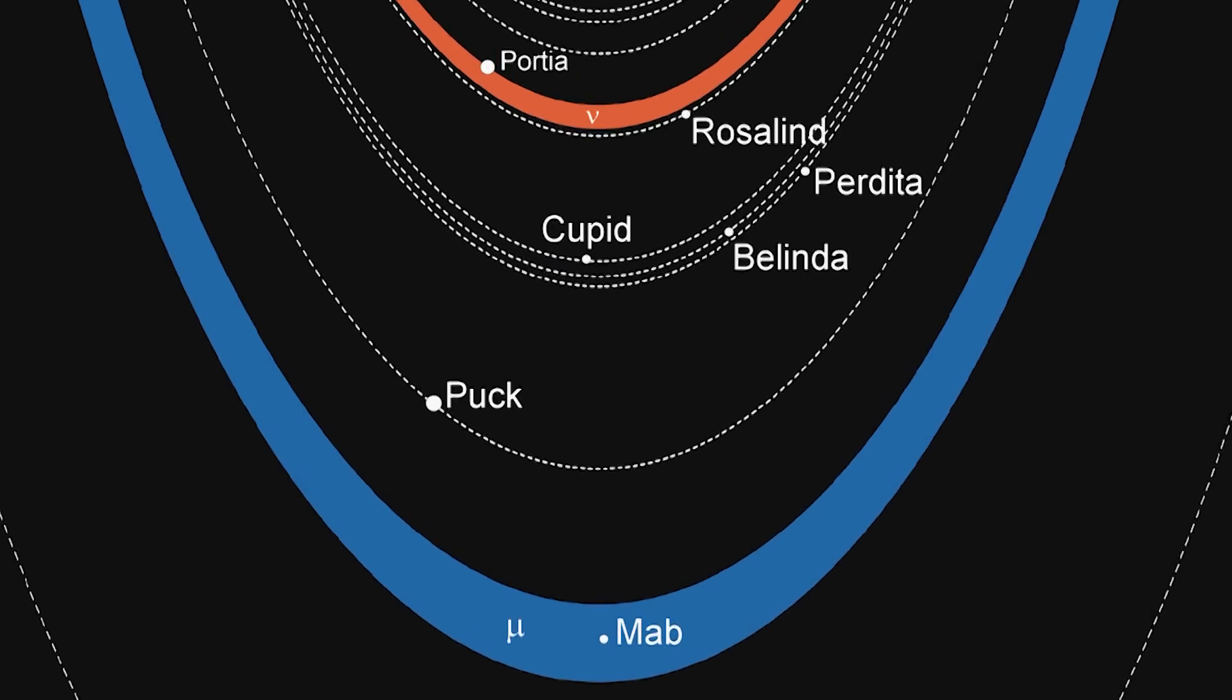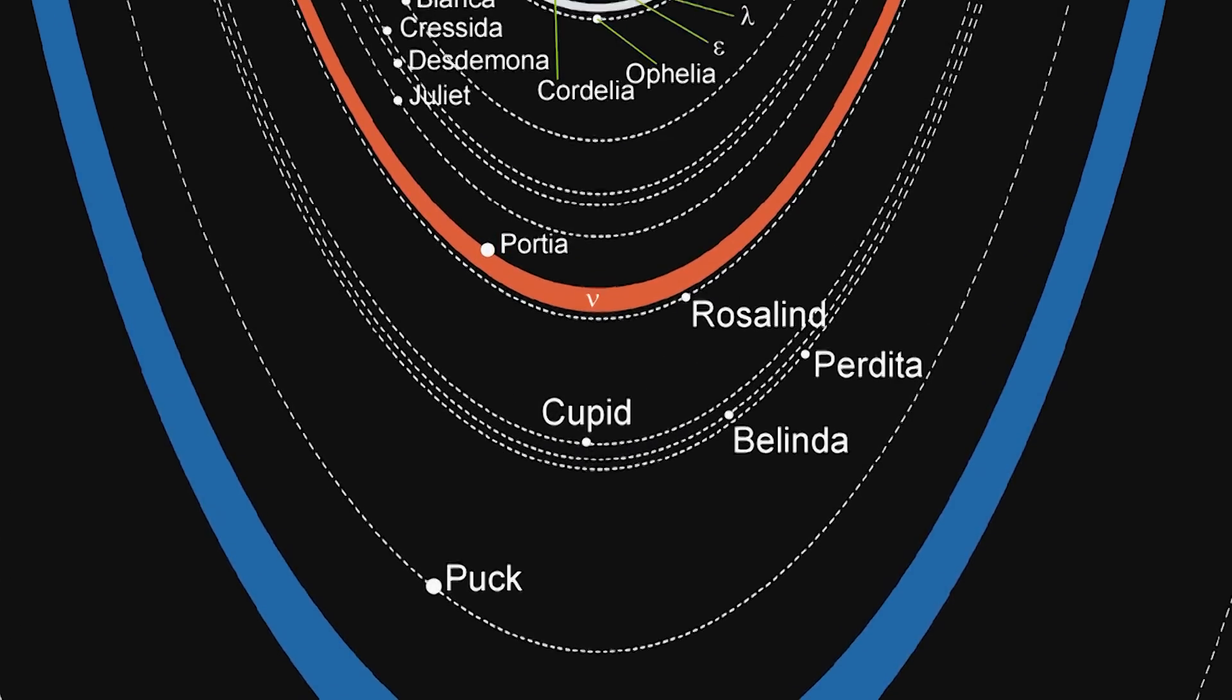Uranus has 13 known rings, and 11 of them are visible in this Webb image.